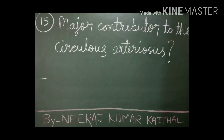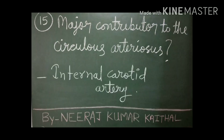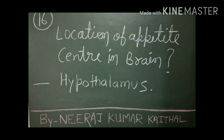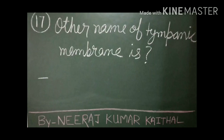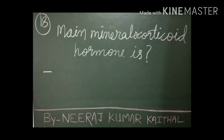Which artery is a major contributor to the circle of Willis? The internal carotid artery is a major contributor to the circle of Willis. The appetite center is located in the hypothalamus of the brain. Next question: what is the other name of the tympanic membrane?